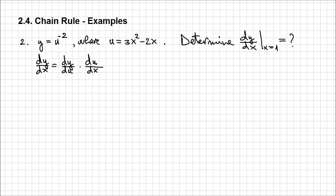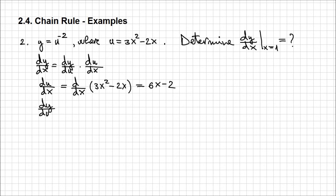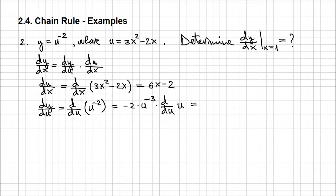I'm going to evaluate these smaller derivatives separately. Starting with du/dx: this is d/dx of 3x squared minus 2x, which gives us 6x minus 2. The other one, dy/du, is d/du of u to the power minus 2. Applying the power rule, the result is minus 2 times u to the power minus 2 minus 1, which is minus 3, times d/du of u — and the derivative of any function with respect to itself is 1. So the result here is minus 2 times u to the power minus 3.